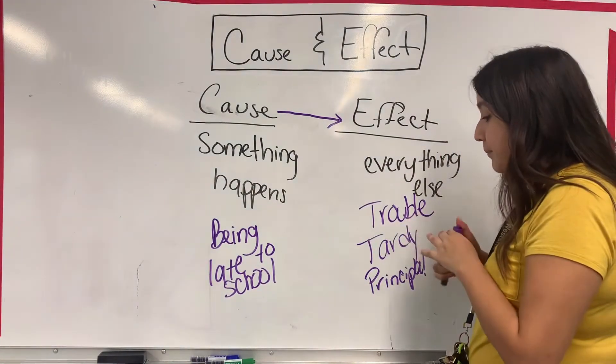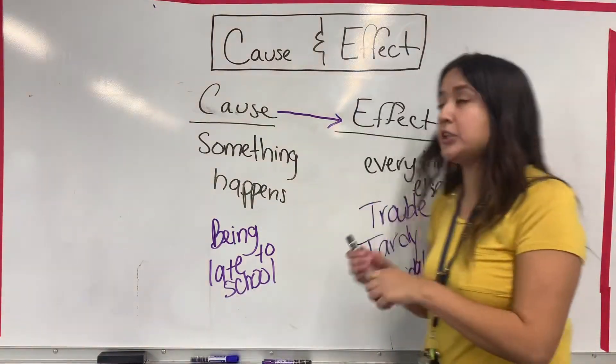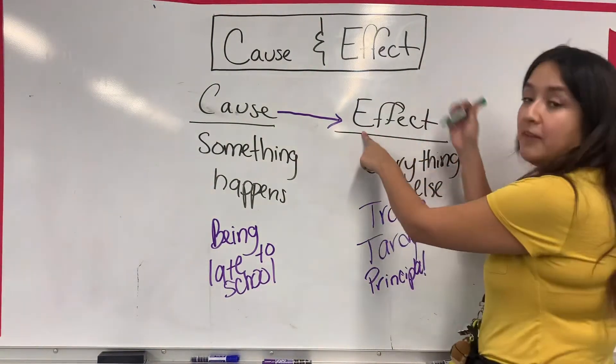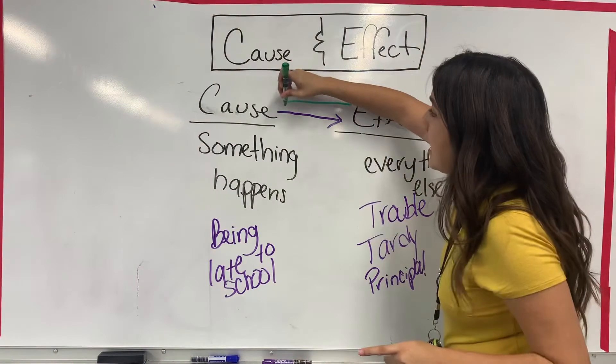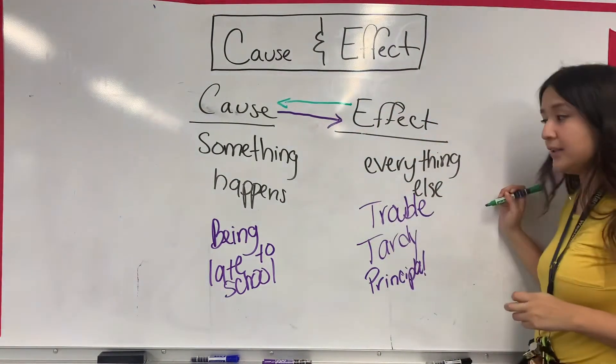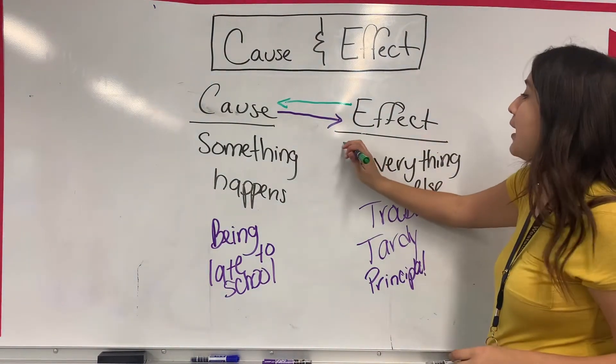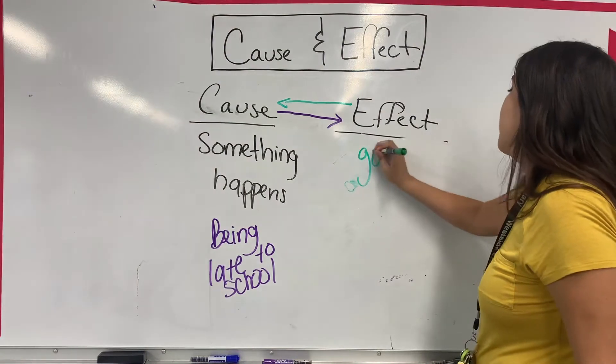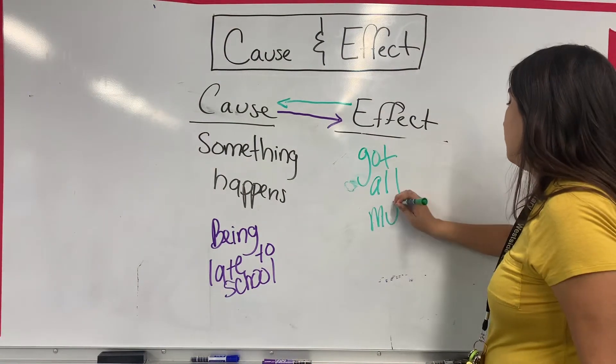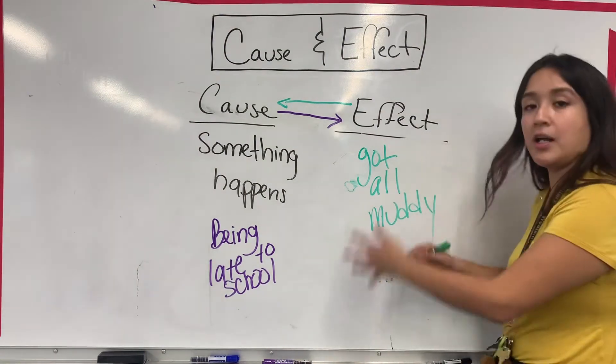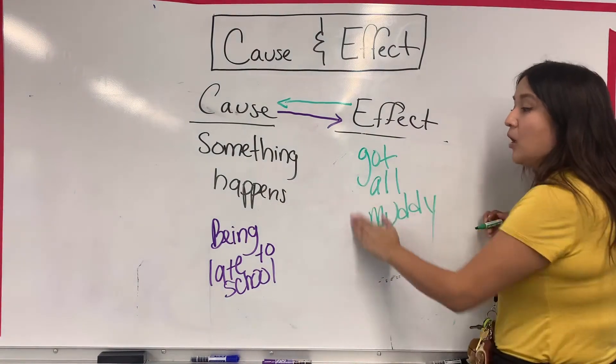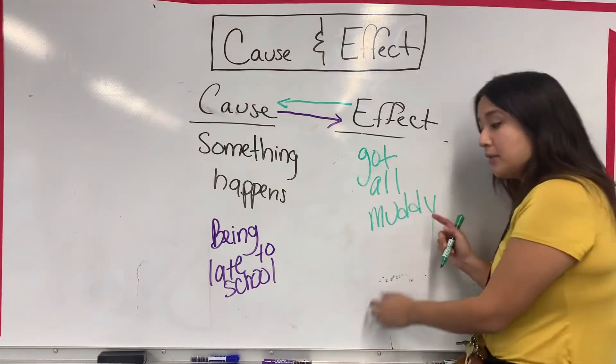One thing that a lot of things do is give you the effect first and then go back to what can cause it. So if I said, oh, you got all muddy - that was an effect. You got all muddy, that's when something happened. What caused you to get all muddy? Well, a lot of things can cause that.